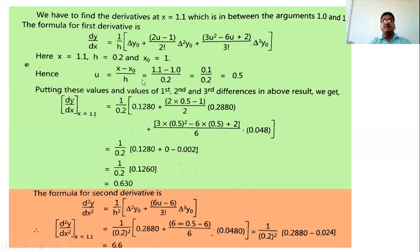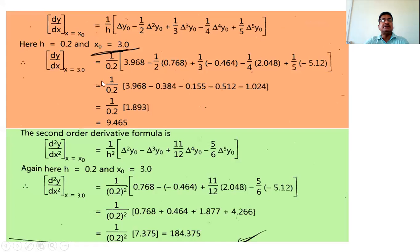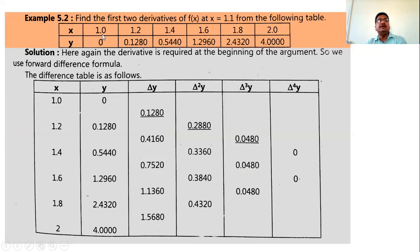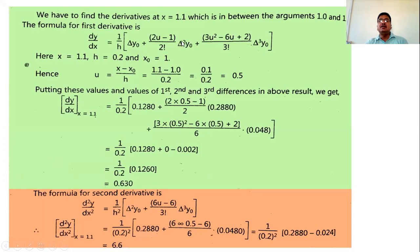In the previous example, the formula for first order derivative at the first point had no u because u = 0, so we directly substituted h and y₀. But here, since point 1.1 is not in the table but is within the range of x values, we use the general formula and compute u = (x - x₀)/h = 0.5.